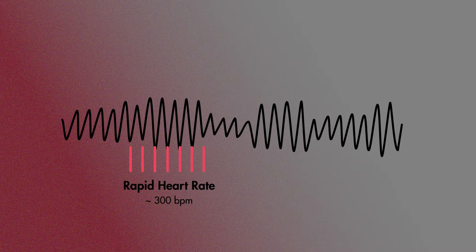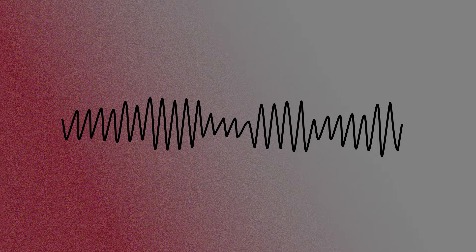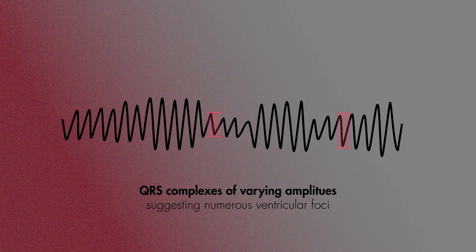Taking a look at the rhythm strip further, we notice that each of these complexes occur in rapid succession at almost a rate of 300, and there are no preceding P waves — so at least we know this is a tachycardic rhythm that isn't originating from the sinus node. Furthermore, notice how wide each of these complexes are, suggesting they are likely from a ventricular source.